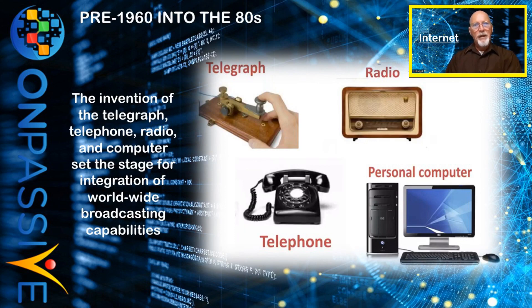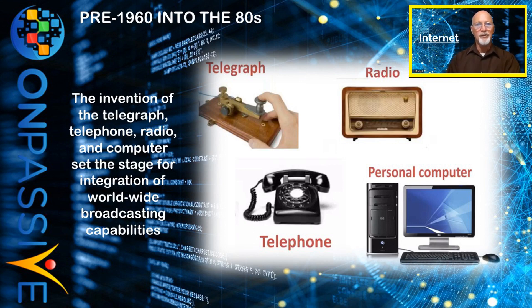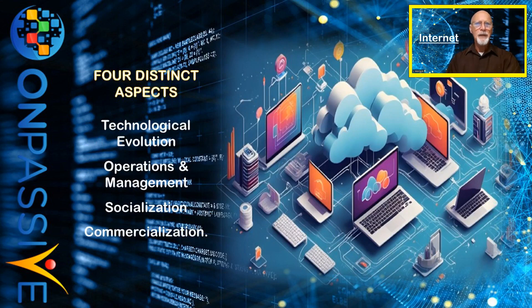The invention of the telegraph, telephone, radio, and computer set the stage for an integration of worldwide broadcasting capability that we know as the internet. Its purpose was to serve as a tool for collaboration and interaction between people and their computers, no matter where they were on the planet. Its relatively brief history revolves around four distinct aspects: its technological evolution, its operations and management, its social aspect, and its commercialization.